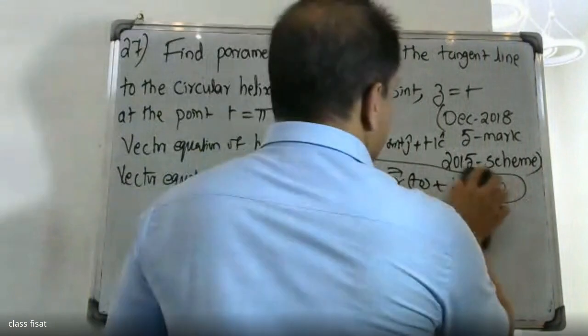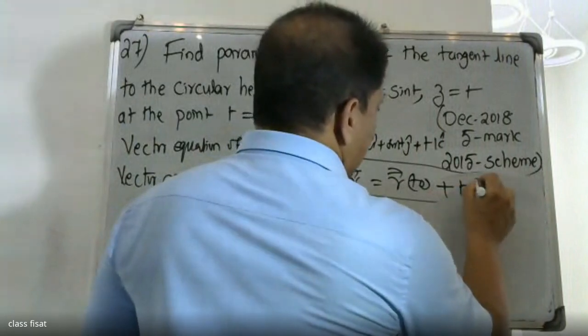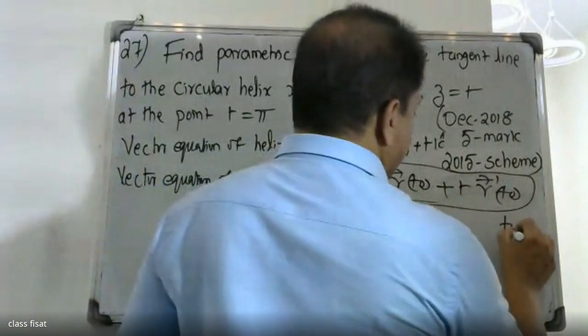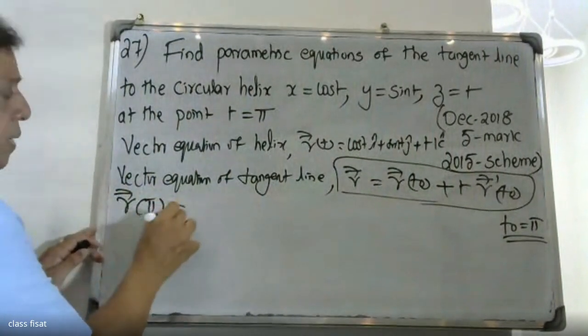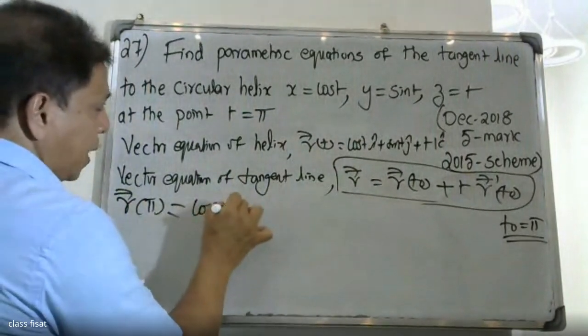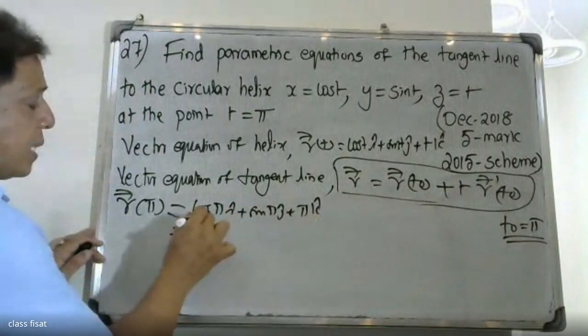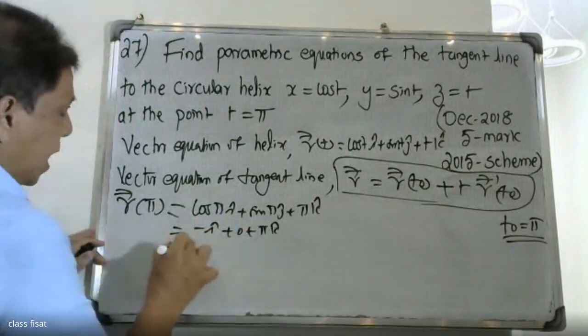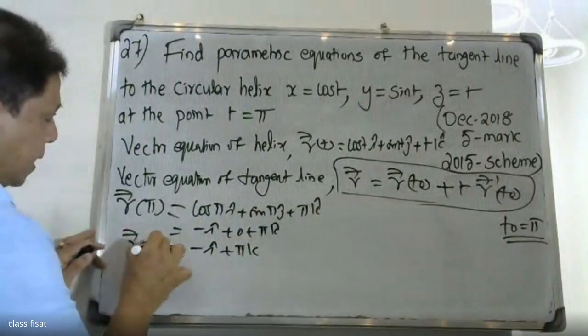Vector R equals R of T0 plus T into R dash T0. Vector R equals R dash T0 plus T into R dash T0. I will say R of π is minus i plus π k. R of π is equal to minus i plus π k.